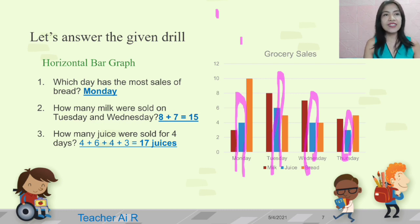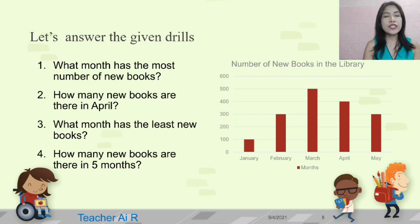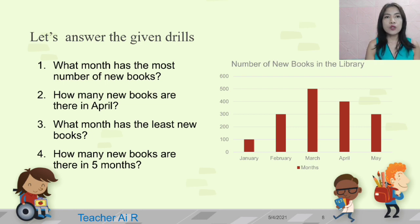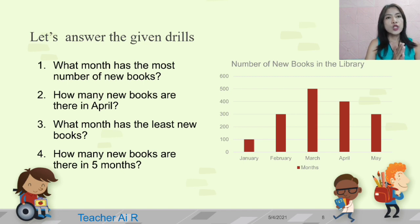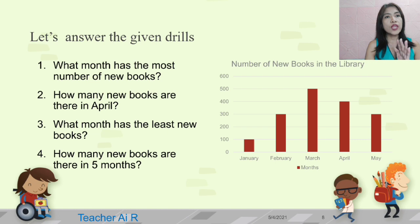Let's continue with our last drill. We are going to answer this given drill. The first question is: what month has the most number of new books? Number two: how many new books are there in April? Number three: what month has the least new books? And number four: how many new books are there in five months? The graph is about the months of January, February, March, April, and May, with new books ranging from 100 to 600.